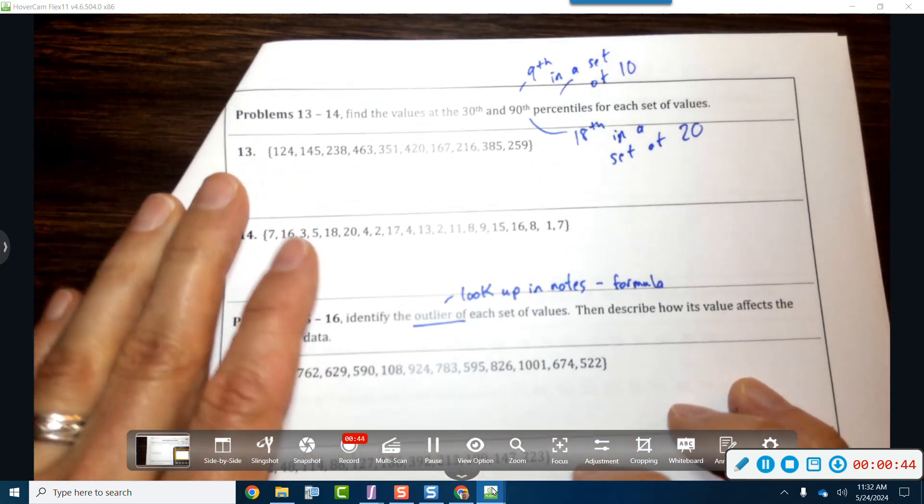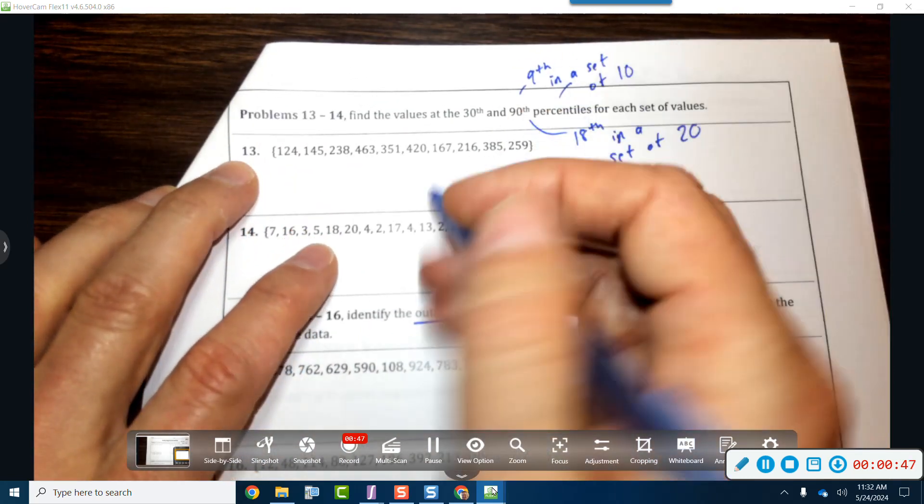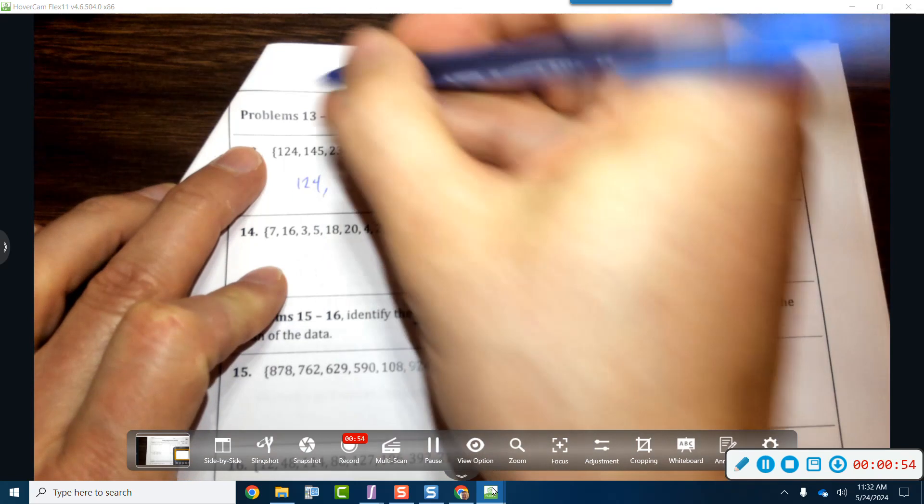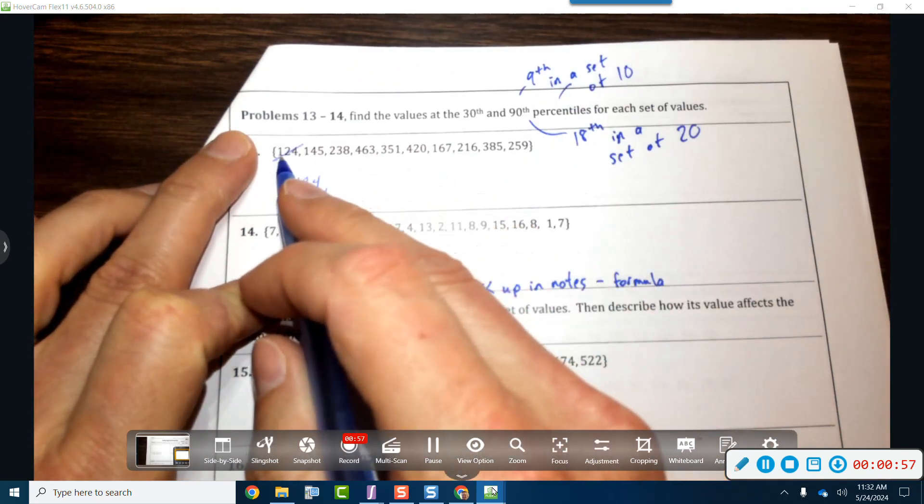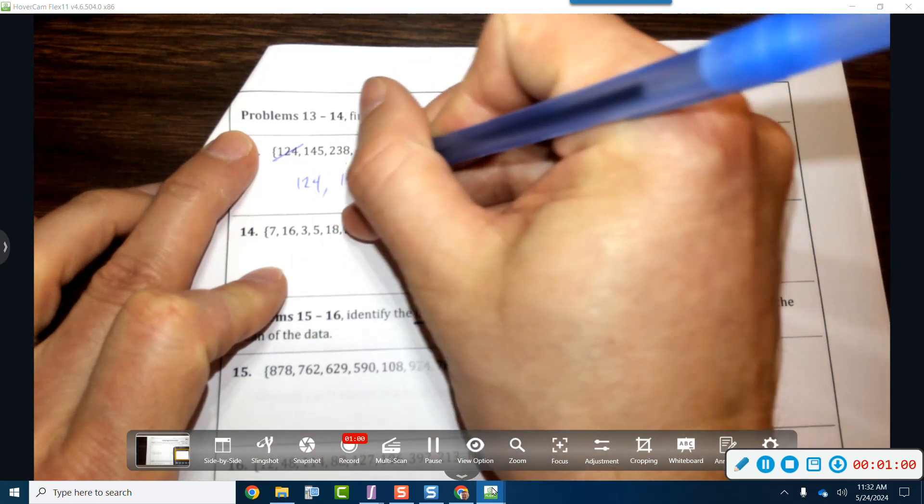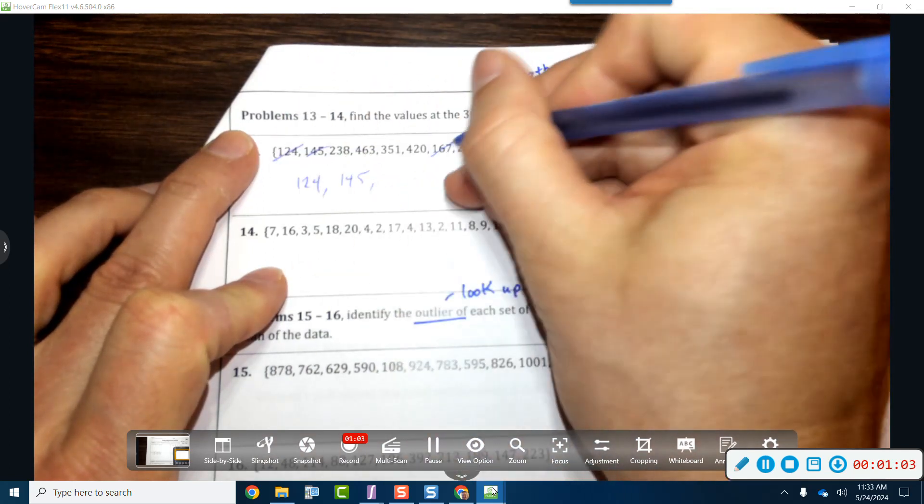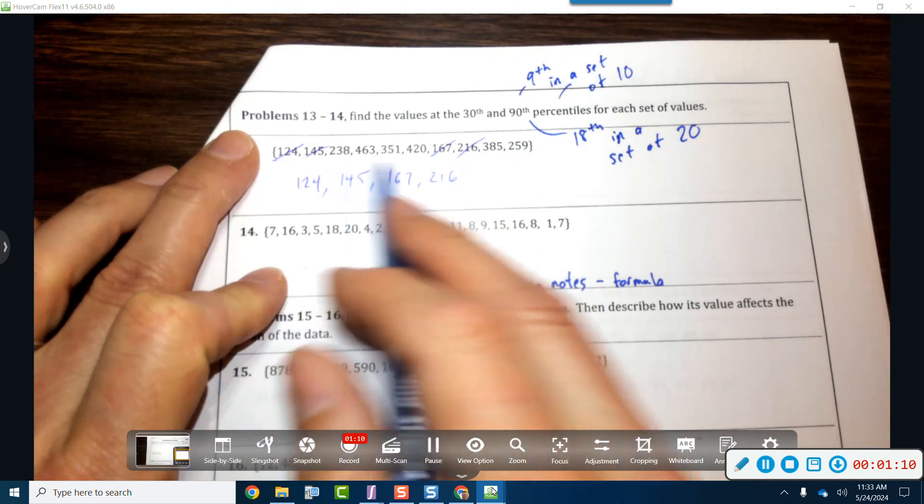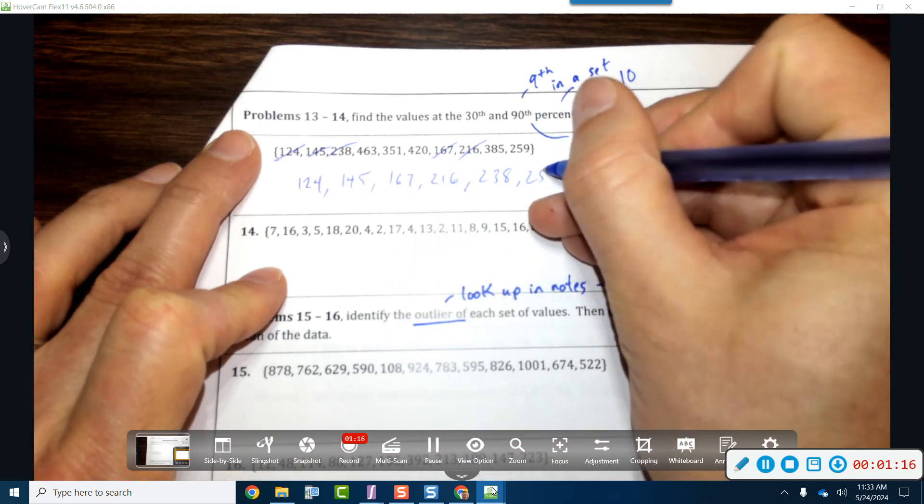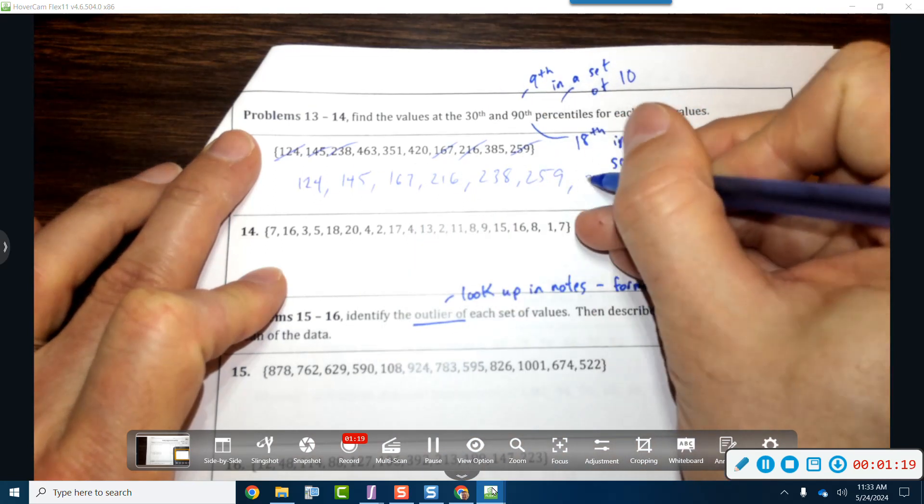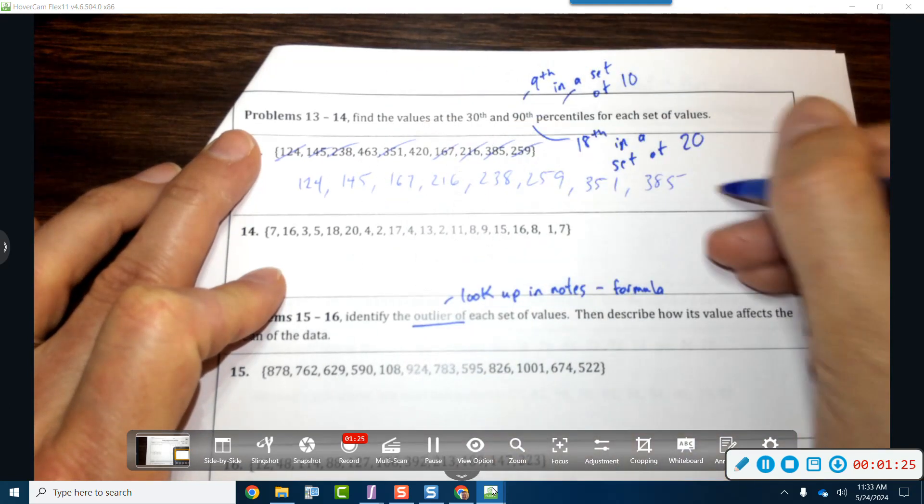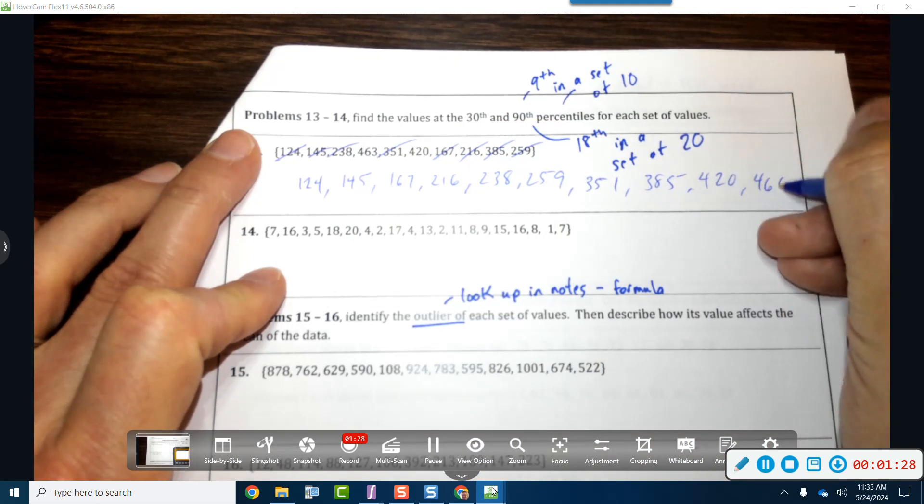So what you've got to do is you have to put these all in numerical order. I do see 124 is the smallest, and then we'll cross it out. 124, then I see a 145, and then a 167, and then a 216, then I see a 238, and then I see a 259, then I see a 351, then I've got a 385, and I've got a 420, and I've got a 463.